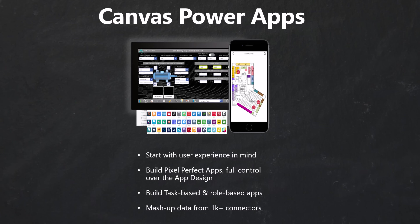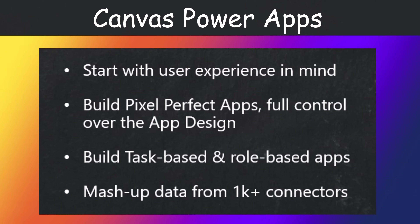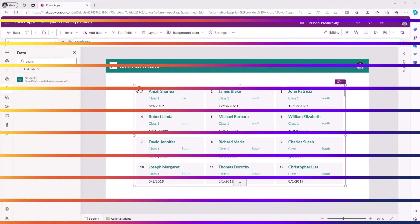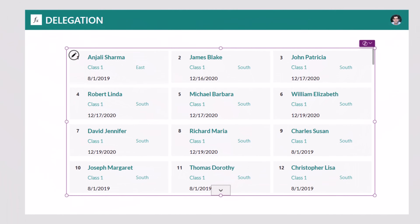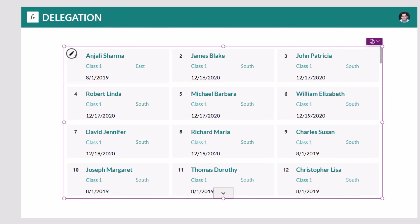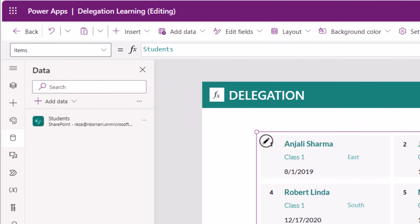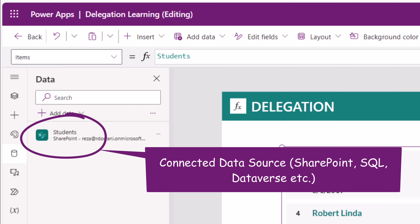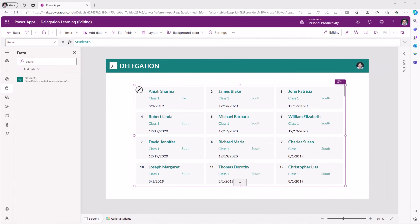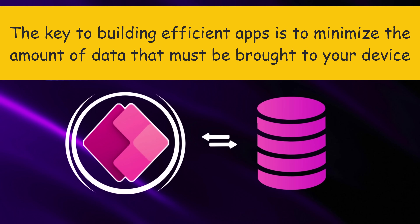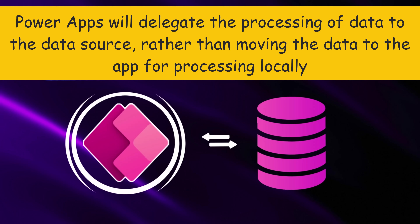With Canvas PowerApps, we begin with the user experience in mind. Canvas apps allow us to build pixel-perfect apps where we have full control over the app design. However, we are so focused on the design aspect of the PowerApp that we as makers tend to ignore the concept of delegation. Delegation is all about data. The key to building efficient apps is to minimize the amount of data that must be brought to the device running the PowerApp, and delegation is where PowerApps will delegate the processing of data to the data source.